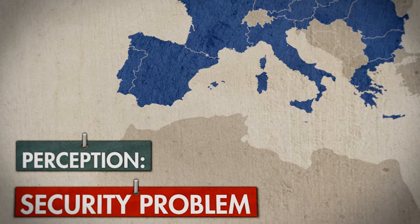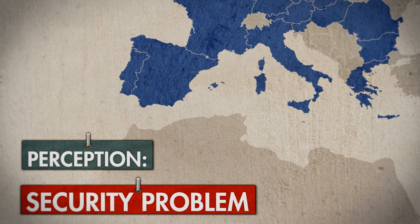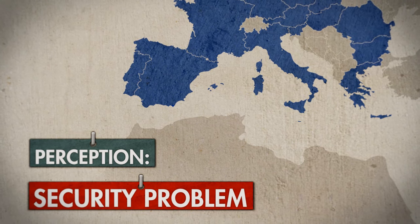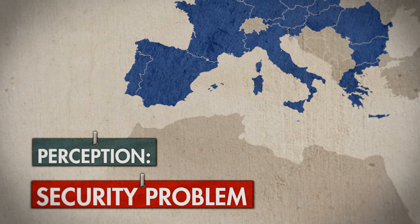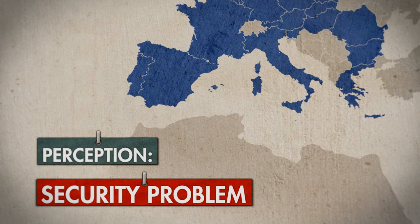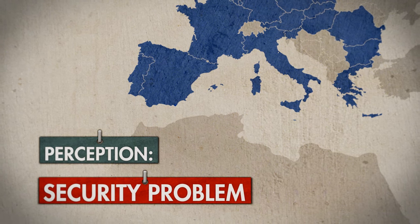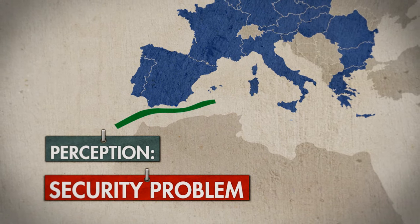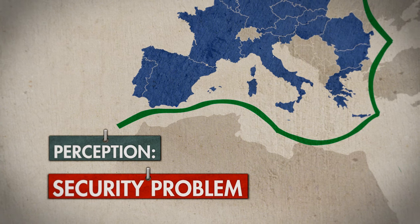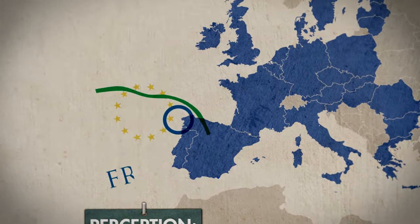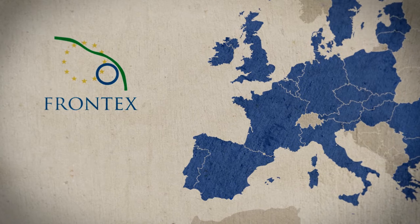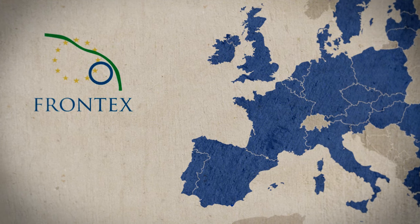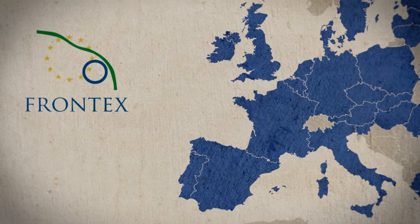The EU is trying to block migrants before they reach its territory. This is done by bilateral agreements with the departure and transit countries and an ever-increasing control of refugee routes on land and water. In 2004, the EU established Frontex, a joint agency to coordinate the surveillance and closure of its external borders.